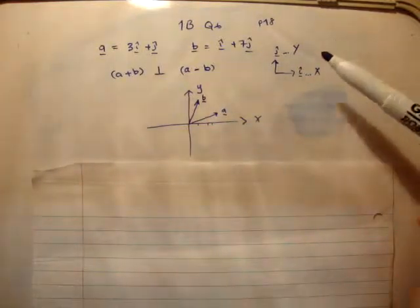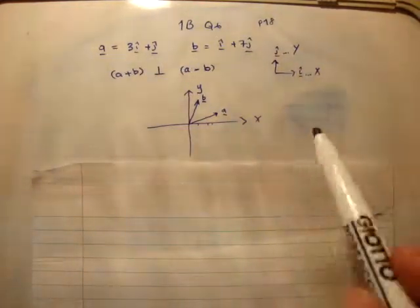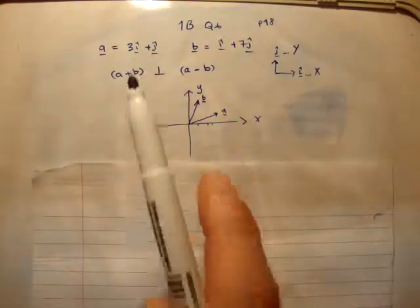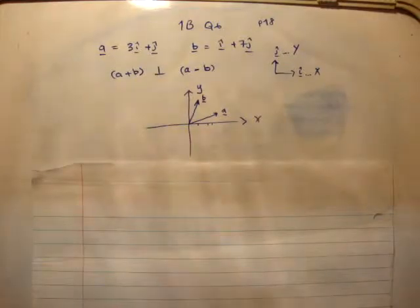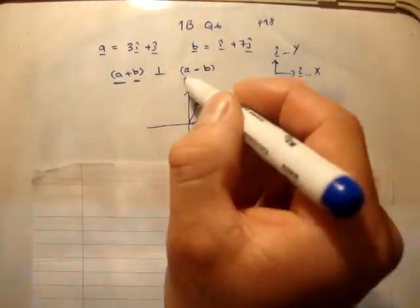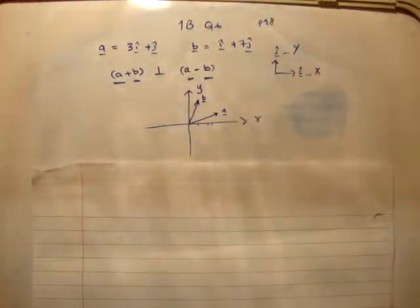We define the usual unit vectors as normal, so j hat is pointing vertically upwards and i hat is pointing horizontally to the right. Vector a has three units in the positive x-axis and one unit in the positive y-axis, while b is one unit in the positive x-axis and seven units in the positive y-axis. The question asks: is a plus b perpendicular to a minus b?